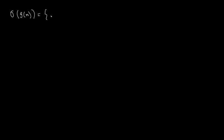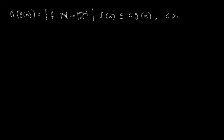Hello, so today we're going to start by practicing with one example of the definition that we gave last time. Remember that we talked about the definition of big O, and we said that big O of g(n) is equal to the set of all functions f from natural numbers to positive real numbers such that f(n) ≤ c·g(n), where c is greater than zero — any value like 2, 3, 10, 10.5, as long as it's greater than zero.